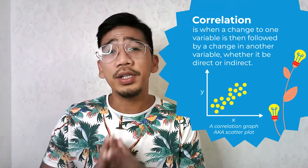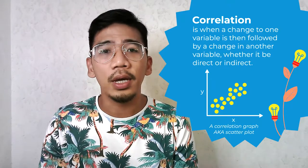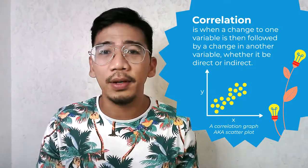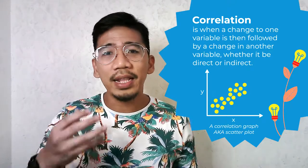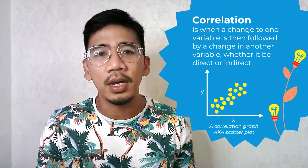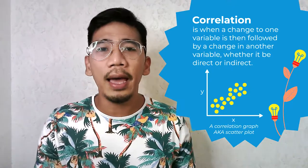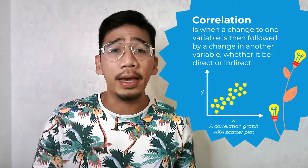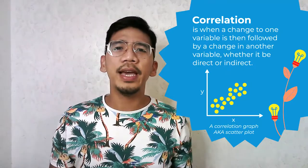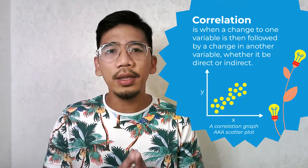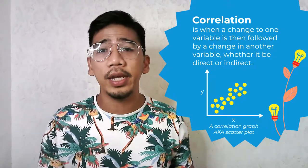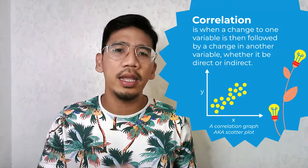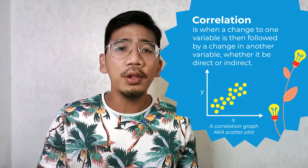Knowing how two variables are correlated allows for predicting trends in the future, as you'll be able to understand the relationship between the variables, or if there's no relationship at all. The main purpose of correlation analysis is to allow experimenters or researchers to know the association or the absence of a relationship between two variables. When variables are correlated, you can measure the strength of the association. The objective is to find the numeric value that shows how two variables relate and move together. One key benefit is that correlation provides a more concise and clear summary of the relationship than regression.